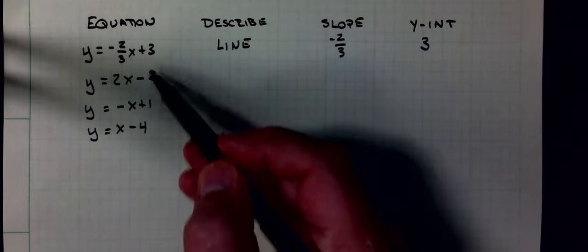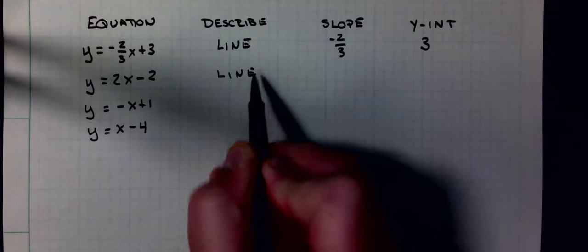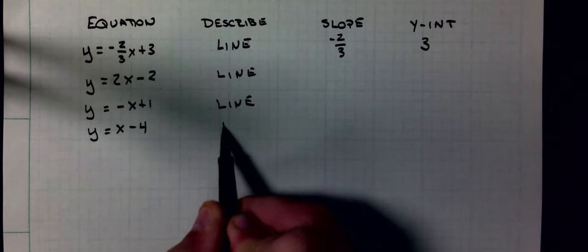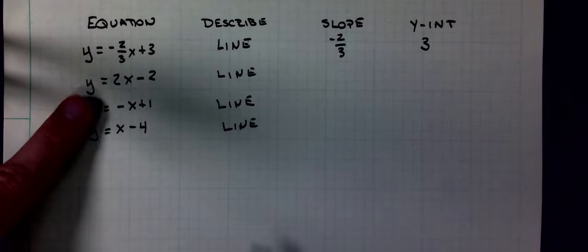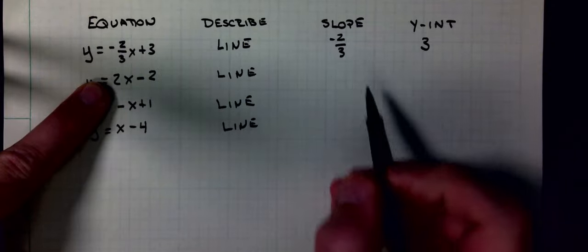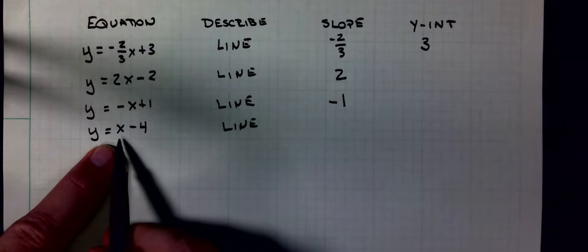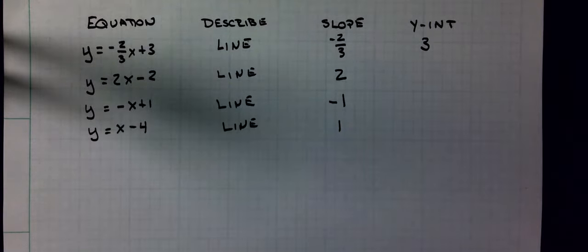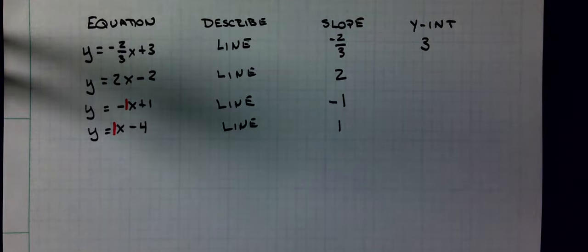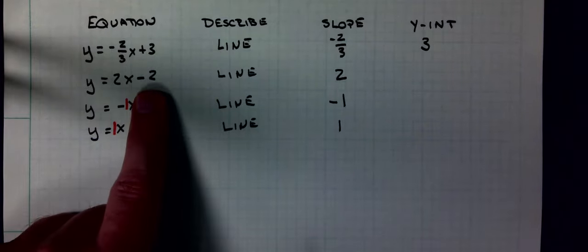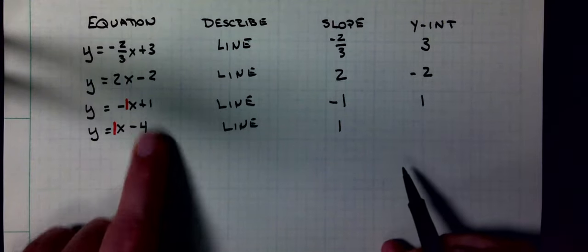All of these are linear equations. These are all going to make a line. Later on this year, we're going to get graphs of other things that aren't lines. The slope is the number in front of the x. In front of the x here is a 2. In front of the x here is a minus 1. In front of the x here is a positive 1. Remember, we have those invisible 1's multiplying in front of the x's. The y-intercept in the first case here would be minus 2, then plus 1, then minus 4.